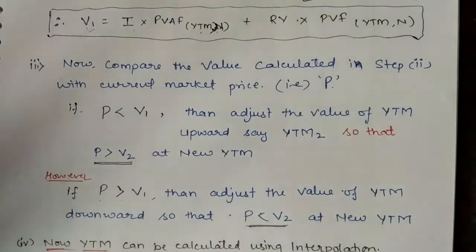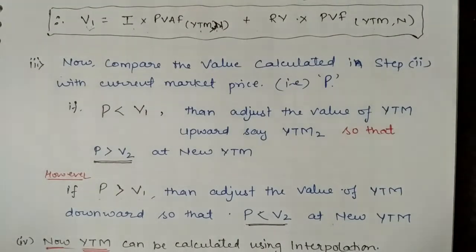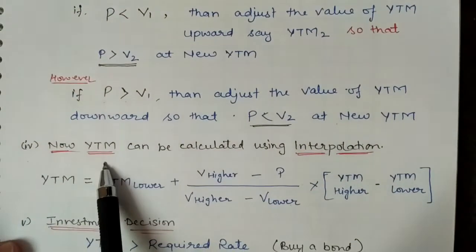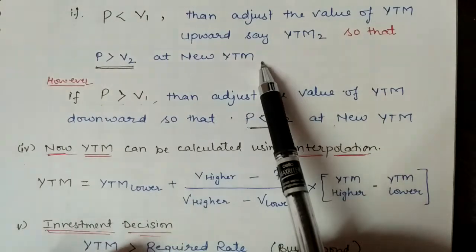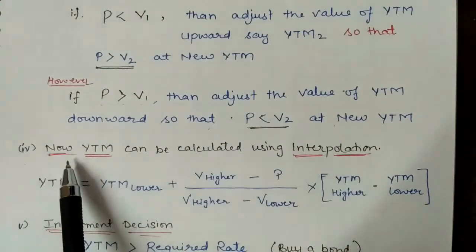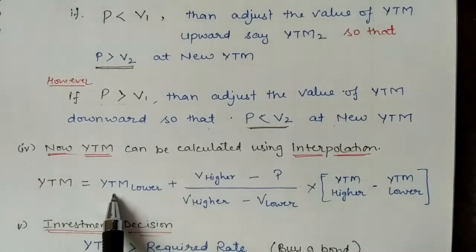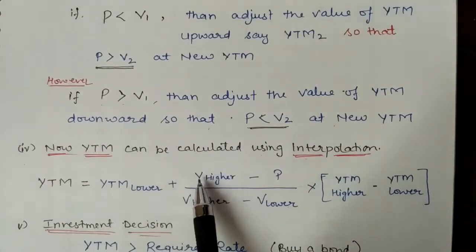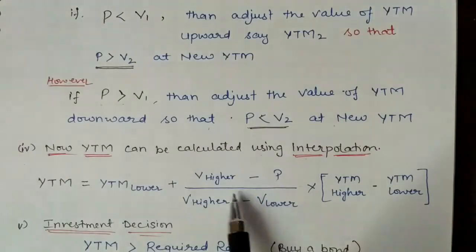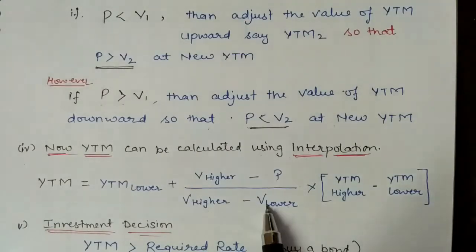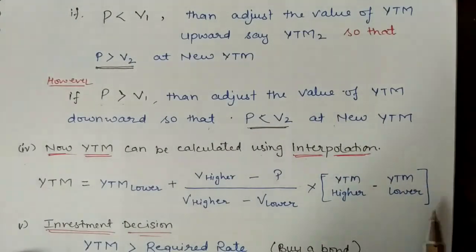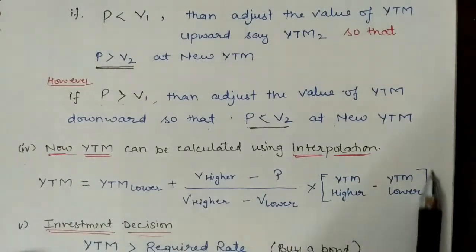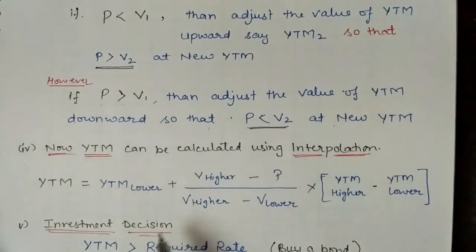Next step: YTM is calculated using interpolation. Once we have two values — one at a higher YTM and one at a lower YTM — we apply the interpolation formula: YTM = Lower YTM + [(V_higher − P) / (V_higher − V_lower)] × (Higher YTM − Lower YTM). This is the same interpolation formula used for Internal Rate of Return, just written in terms of YTM instead of percentage rate.